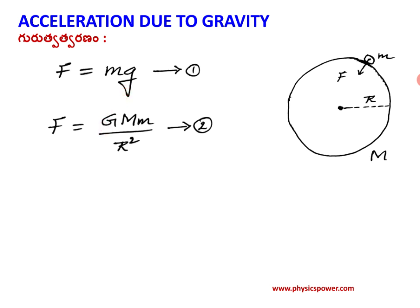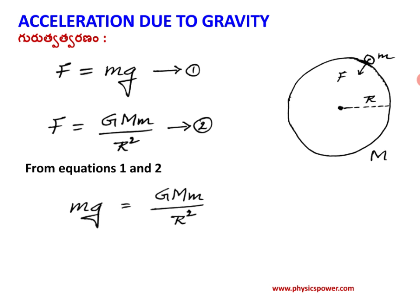Capital G is the universal gravitational constant, which has the same constant value everywhere. These two equations both express the force on small mass m, so they are equal. Setting equation 1 equal to equation 2: mg equals G times M times m divided by R squared. Cancelling m from both sides, the result is g equals GM divided by R squared.